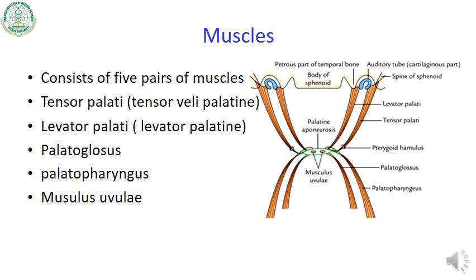All these muscles are extrinsic, except musculus uvulae, which is intrinsic — limited to the soft palate itself. The rest of the muscles have attachments at other places. So there are four pairs of extrinsic muscles and only one pair of intrinsic muscles.